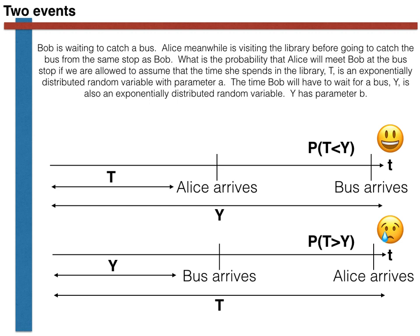Before I show you how to calculate this particular probability, let's first briefly review the exponentially distributed random variable. We need to do this as if you look at the question, you see that Y and T are both exponentially distributed random variables.